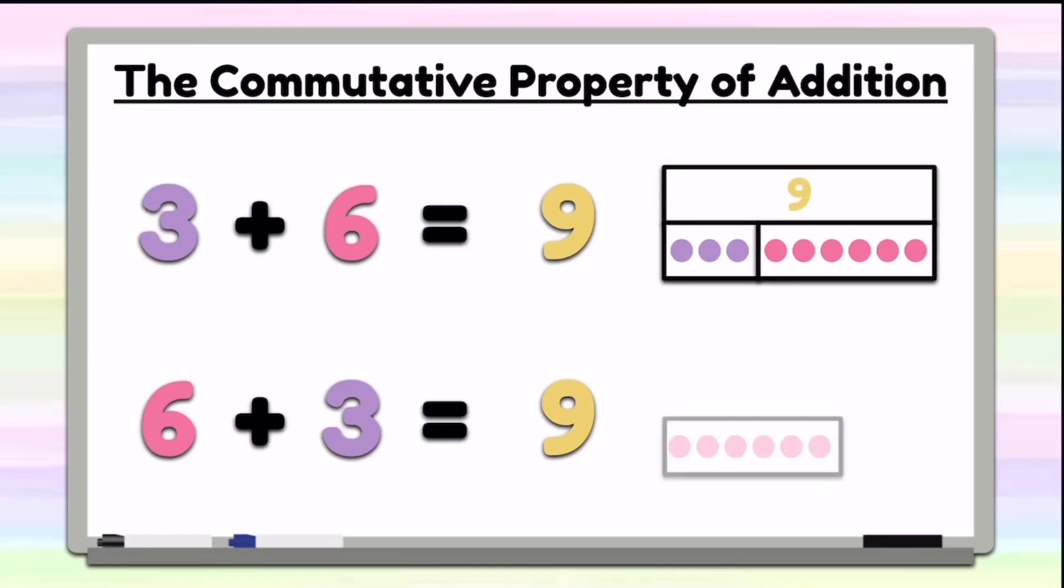Now if we start with the 6 counters first and we add 3 counters, we notice that our sum will still be 9.